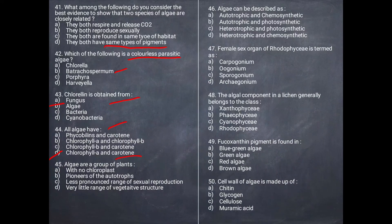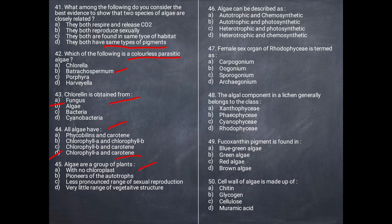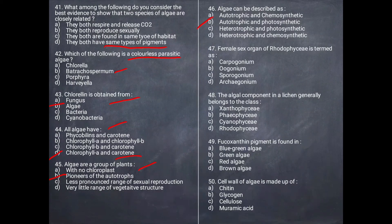Next question: Algae are a group of plants — what characteristic do they not have? They are pioneers of autotrophs. Algae can be described as autotrophic and photosynthetic. The correct answer is B, autotrophic and photosynthetic.